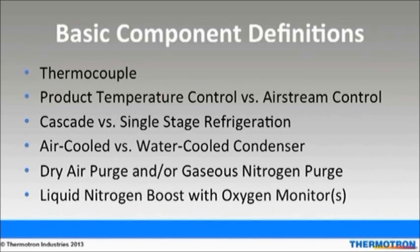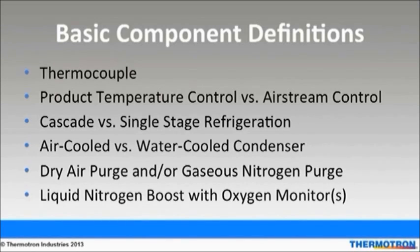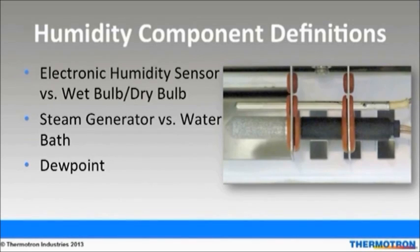Gaseous nitrogen is an alternative to dry air purge. Its purpose is to minimize the moisture level inside the chamber. Liquid nitrogen boost enables faster pulldowns and dissipation of heat from the product. An oxygen monitor or monitors can be added to the chamber or test lab to monitor oxygen levels, and it also features an alarm if a depleted oxygen environment exists. An electronic humidity sensor gives high quality responses and is very accurate at low humidity levels, and it doesn't require as much maintenance as a wet bulb-dry bulb system.